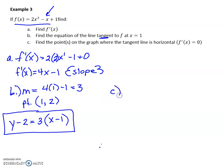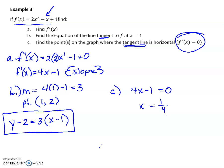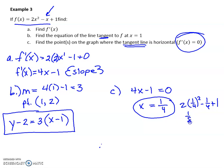The last part says: find the points on the graph where the tangent line is horizontal. This means the derivative equals 0. Take the derivative 4x minus 1 and set it equal to 0, giving x equals 1 fourth. To find the y value, plug 1 fourth back into the original equation: 2 times (1 fourth) squared minus 1 fourth plus 1, which is 1 eighth minus 2 eighths plus 8 eighths, giving 7 eighths. So the point (1/4, 7/8) is where the graph has a horizontal tangent.